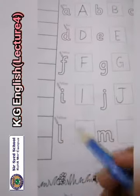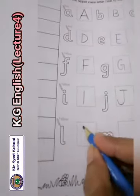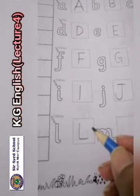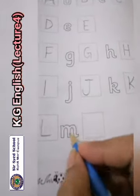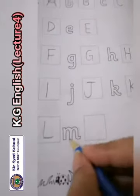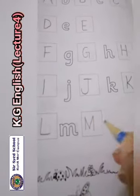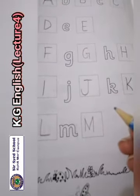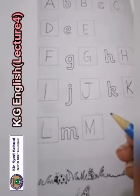Small L, capital L. The sound of L is 'l'. The next is M — small m, capital M. The sound of M is 'm', and the sound of N is 'n'.